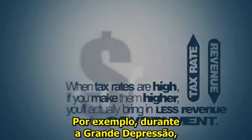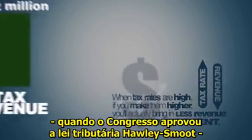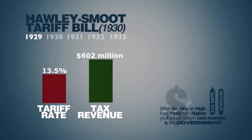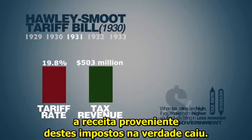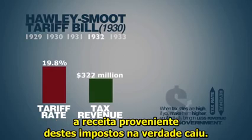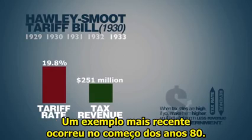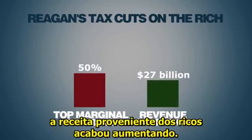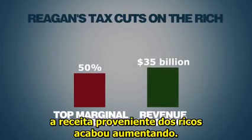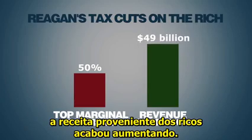For instance, during the Great Depression, when Congress passed the Hawley-Smoot Tariff Bill, although the bill raised taxes on imported goods, the revenue from those taxes actually decreased. A more recent example occurred in the early 1980s: after President Reagan and Congress drastically reduced the tax rates on the rich, the tax revenue from the rich actually increased.